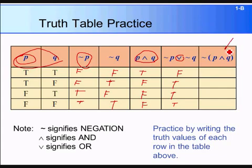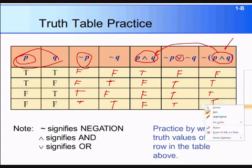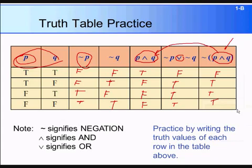The last column is the negation of the AND statement. We take the conjunction column and negate it. The one true value becomes false, and the rest — which were false — become true. That's how your completed table looks.